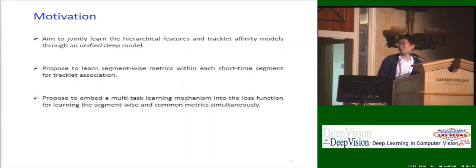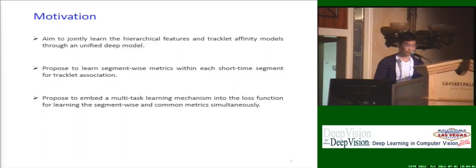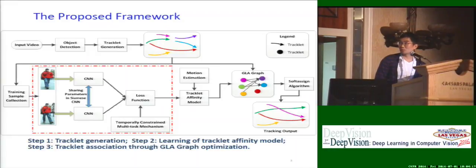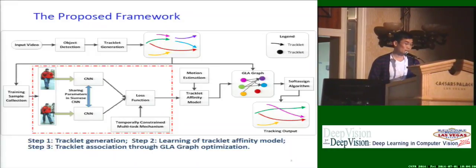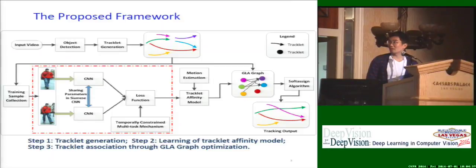This is incorporated into the cost function for the tracklet association. We also establish a large-scale multi-people tracking benchmark for further research. For the proposed method, which is positioned and highlighted in the red box, the model learns the Siamese convolutional neural networks simultaneously through a unified model, and it estimates the linking probability between two tracklets.